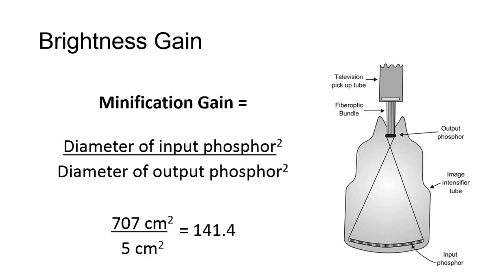The result is 141.4, meaning the brightness of the light emitted from the image intensifier will be 141 times greater than the light originally emitted from the input phosphor from the minification process alone.